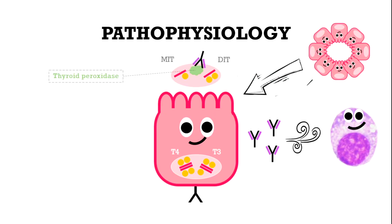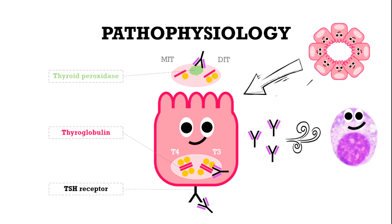Number one is the enzyme thyroid peroxidase, responsible for iodination and coupling to synthesize the thyroid hormones. Number two is thyroglobulin, which acts as a substrate for the synthesis of thyroid hormones. The third target is the TSH receptor; TSH acts through the TSH receptor and is the major stimulator of thyroid cell growth, differentiation, and function. By that, they block the targets and get in the way of normal thyroid function.